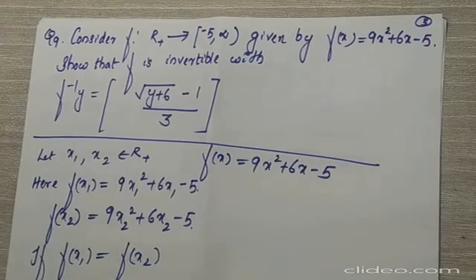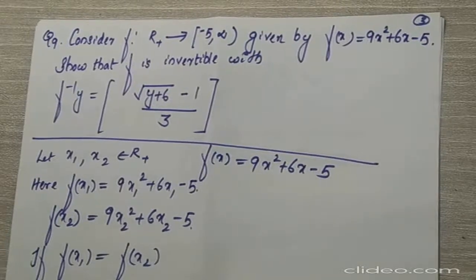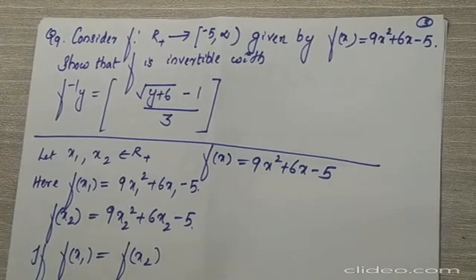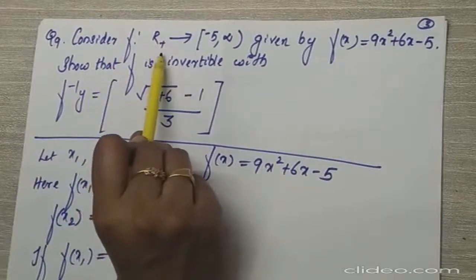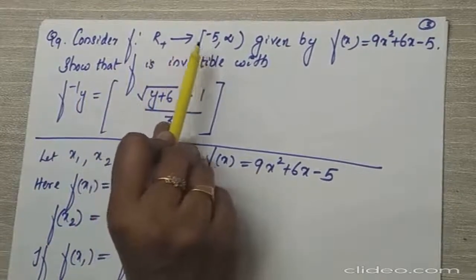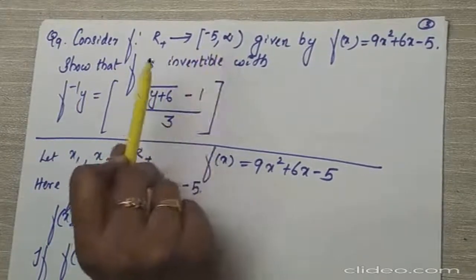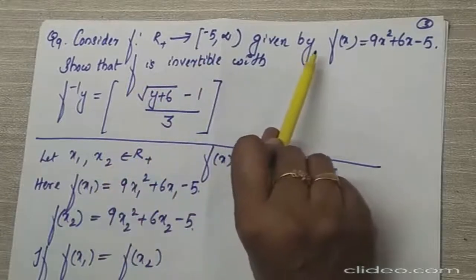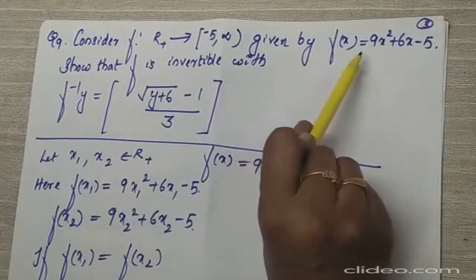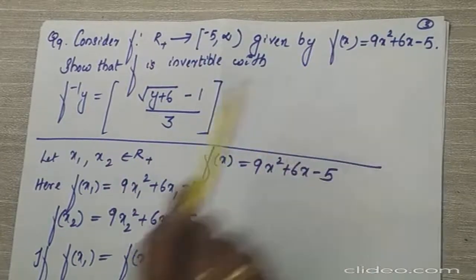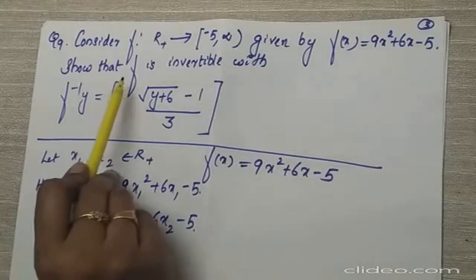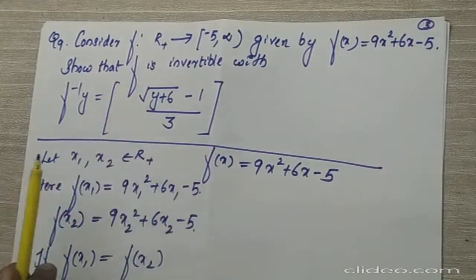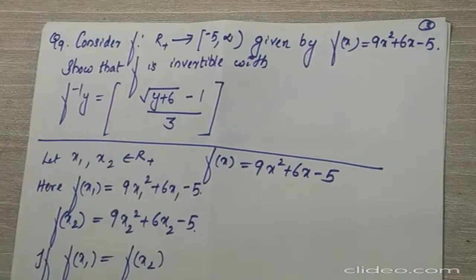Let me explain the 9th question of exercise 1.3. Here the function is from positive real numbers to minus 5 infinity, and f(x) is equal to 9x² + 6x - 5. You have to show that the function is invertible and find f inverse.